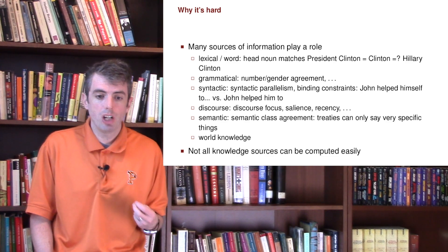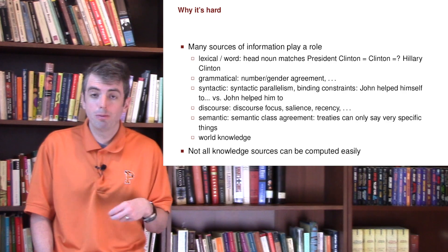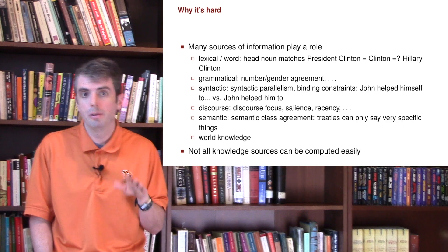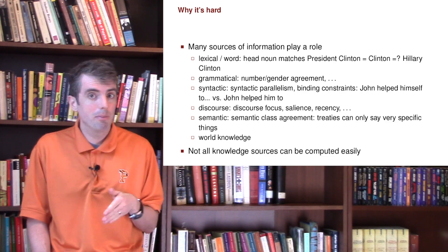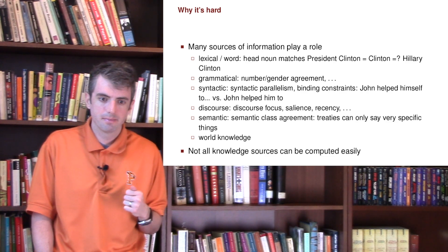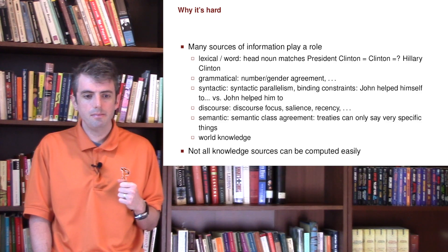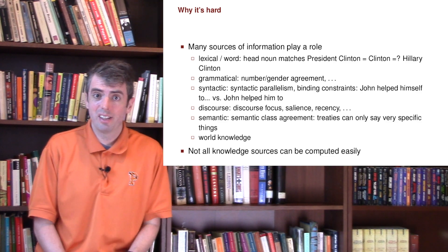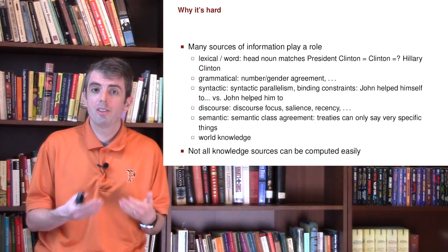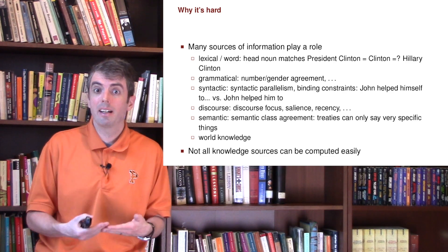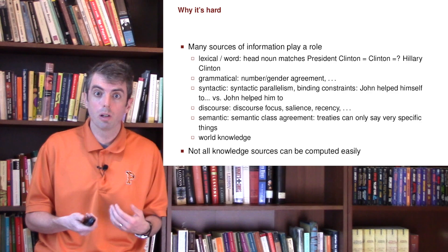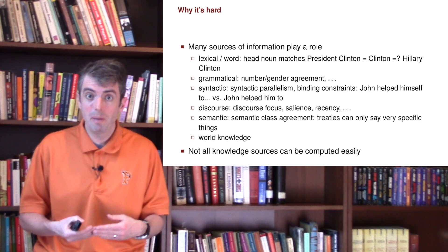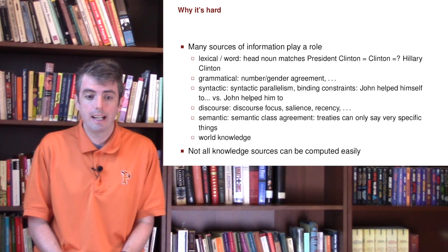There are also syntactic constraints. If you have the sentence 'John helped himself', 'himself' will always refer to John. But if you have 'John helped him to...', then 'him' can never refer to John. And then there's a lot of world knowledge that comes into play. If you mention a flying beast, you're more likely talking about a dragon than a flying squirrel. Not all sources of knowledge are really compatible with the co-reference task.